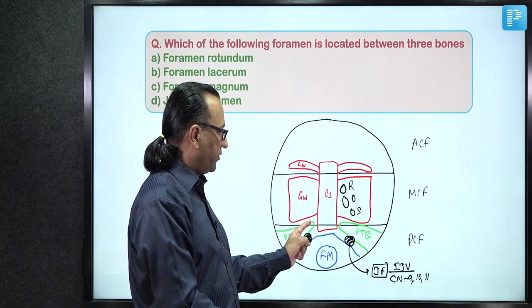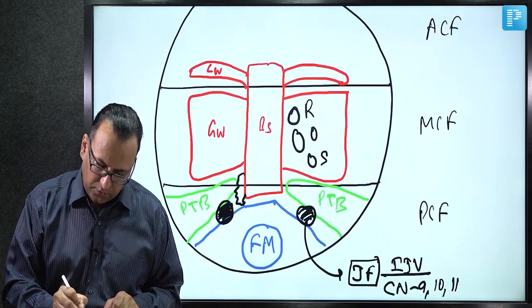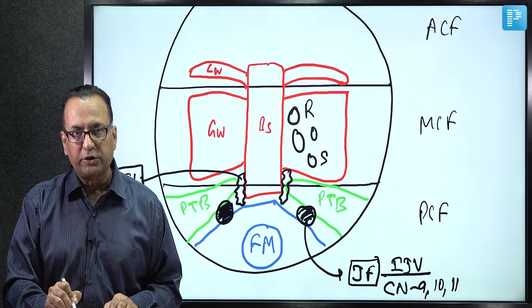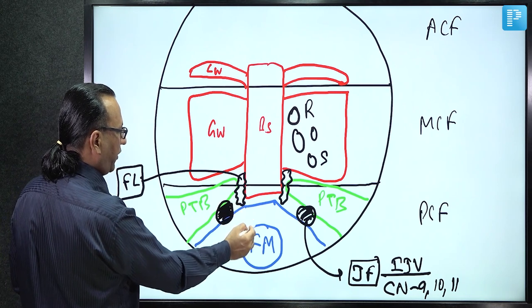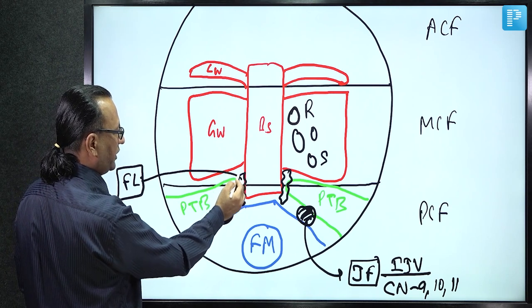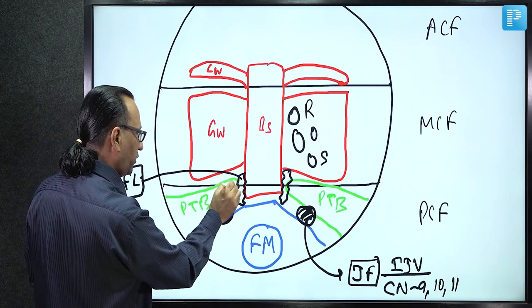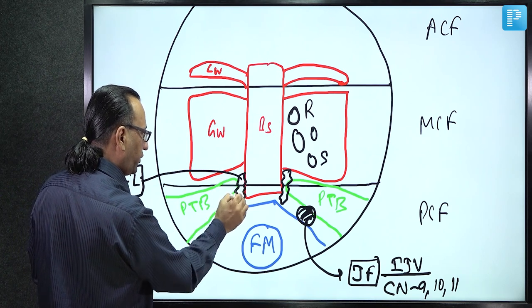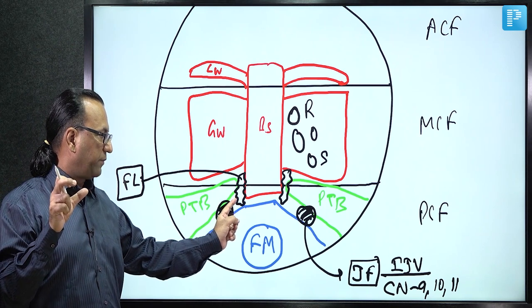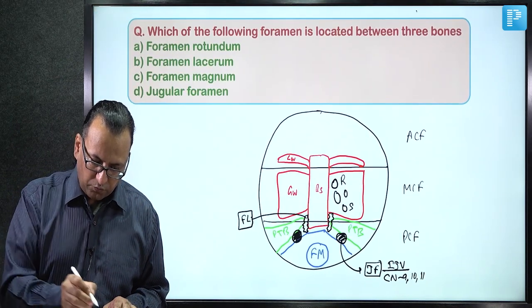At the apex of the petrous temporal bone lies the foramen lacerum, with a lacerated margin. It is bounded by three bones: the basilar part of the occipital bone, the apex of the petrous temporal bone, and the greater wing / root of the pterygoid process of the sphenoid. Foramen lacerum is not a through-and-through foramen — its floor has a plate of cartilage closing it.